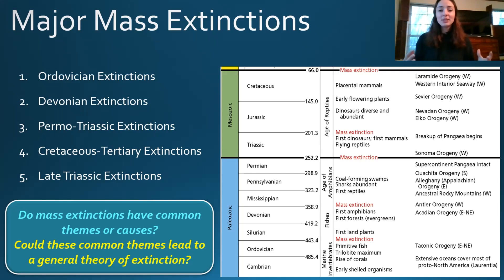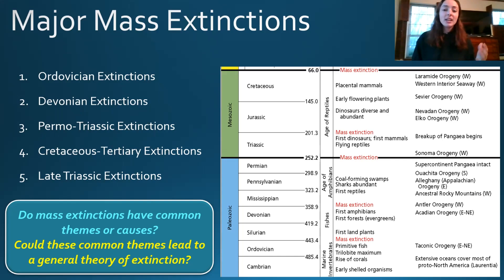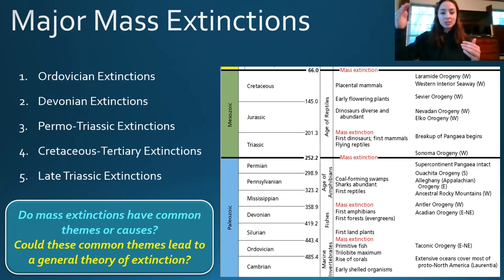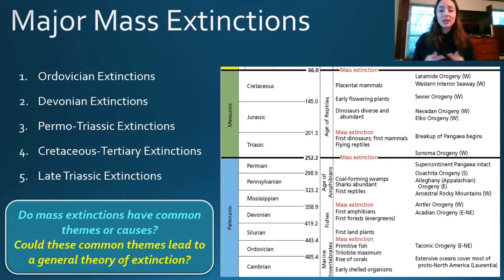You might notice these extinction events tend to happen at boundaries in the geologic timescale. This is not a coincidence — we knew about the fossil record before we put together the geologic timescale. We actually segmented the timescale based on the fossil record. When we look at the Permo-Triassic and Cretaceous-Tertiary extinctions, we see huge differences in fossil content in the rock record across those boundaries, and so people placed major boundaries there — which is generally how the geologic timescale was made.